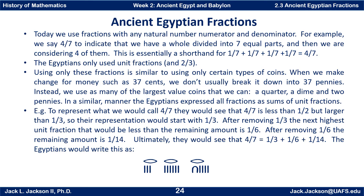The Egyptians would say: if you had four whole things and divided equally among seven groups — for example, four loaves of bread divided equally among seven people — each person would get one-third of a loaf, a sixth of a loaf, and a fourteenth of a loaf.